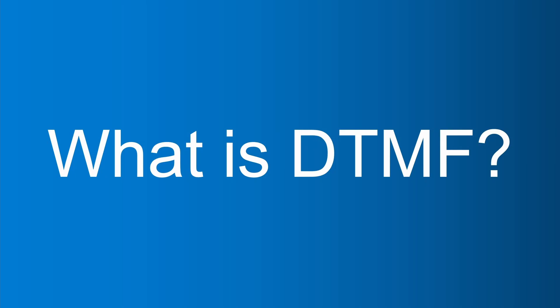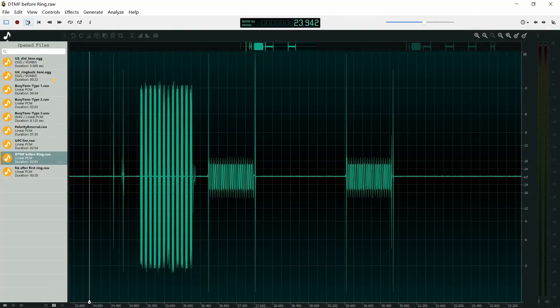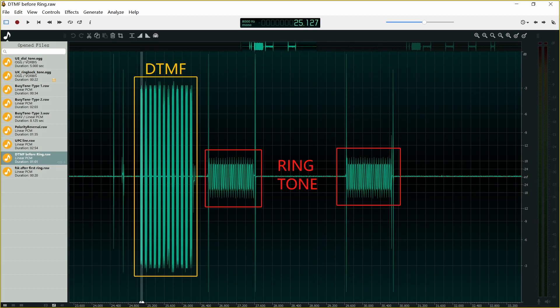DTMF is short for dual-tone multi-frequency. A DTMF signal consists of two frequency audio signals superimposed on each other. DTMF codec converts the input information into a two-tone signal for transmission when encoding. If you want to learn more about DTMF, you can check the video 'How to analyze DTMF in SIP calls via Wireshark.' It sounds like this. We can see that the DTMF event occurs before the first ring, so we can see the caller ID before we hear the ringtone.